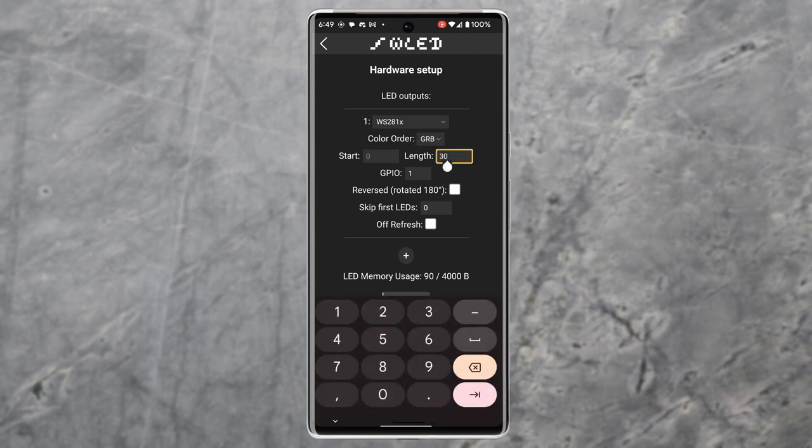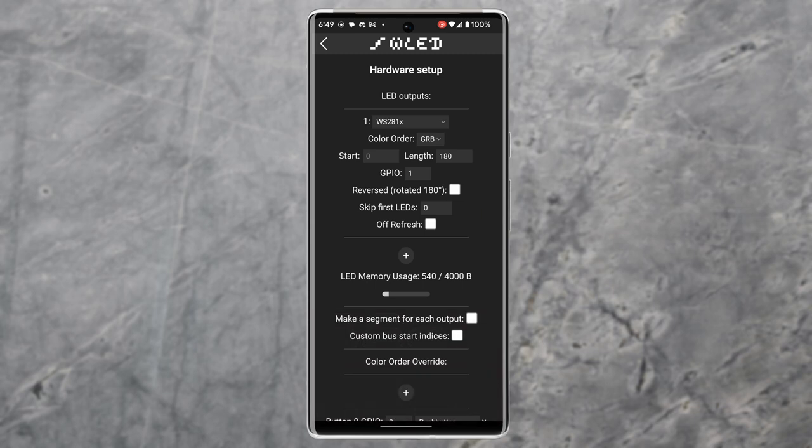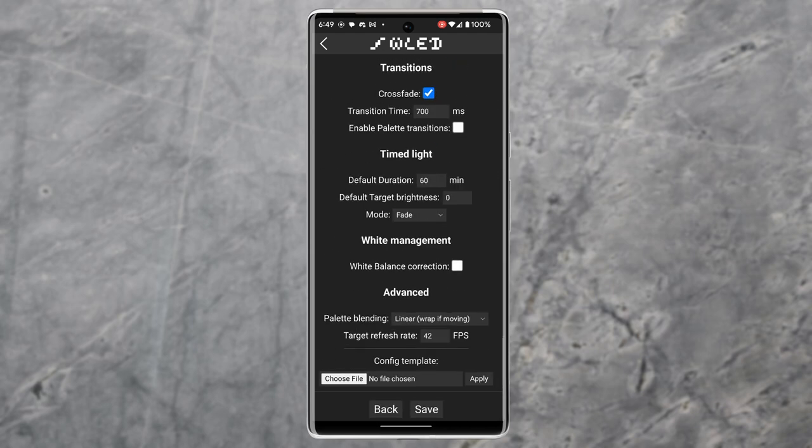Earlier I mentioned that I have about 180 LEDs but I'm not really sure. I could set it to a lower number like 170 LEDs and then when I connect the LED strip see how many LEDs are off and then just add that number to the number of LEDs in WLED. Once you're done scroll down and press the save button.